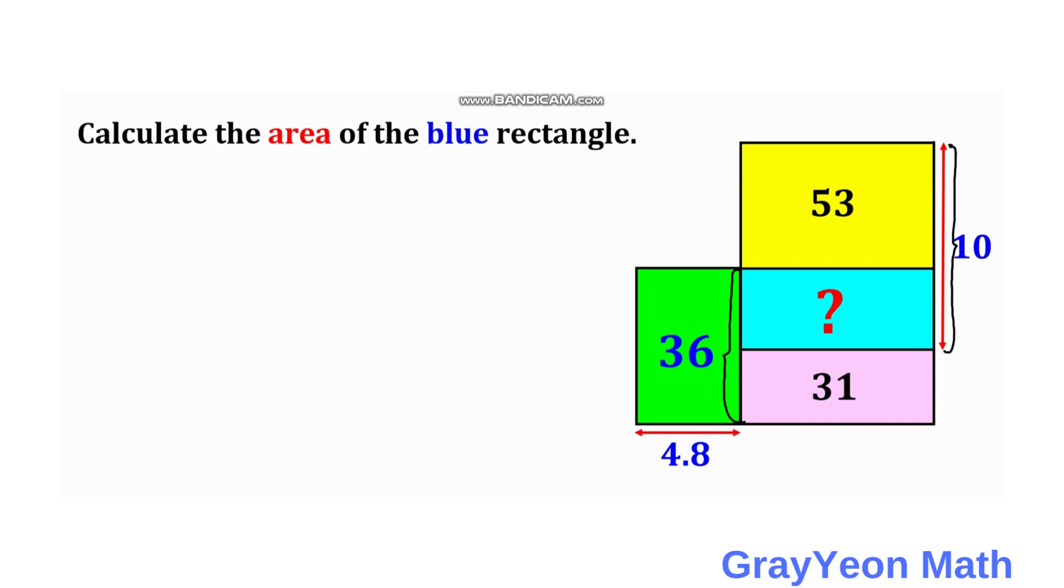The combined width of this blue and lavender rectangle. And to get that, we are to get this area divided by this length, 4.8. So let us call that as width 1. So W1 is equal to 36 over 4.8. And W1 is equal to 7.5 units.